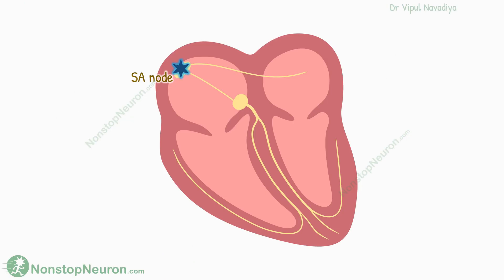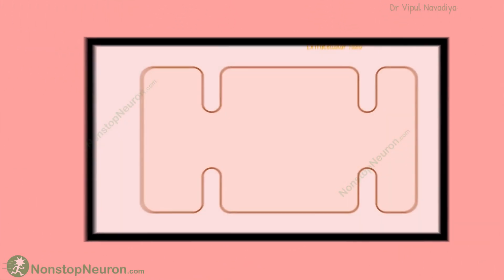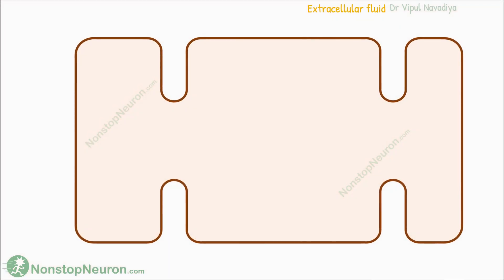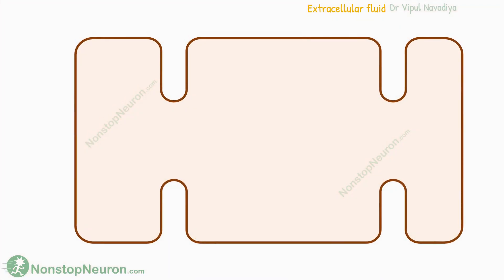First of all, the impulses for the heartbeat originate in the SA node and then spread throughout the musculature of the heart. Now let's zoom into the cardiac muscle to understand how it spreads from cell to cell.